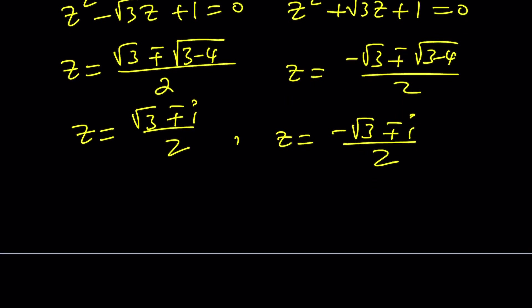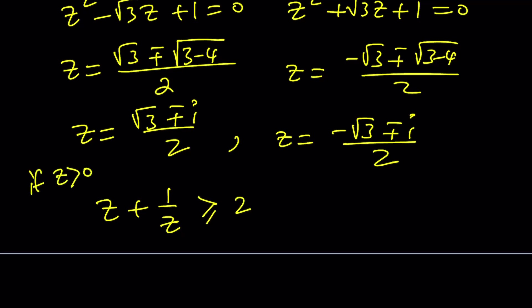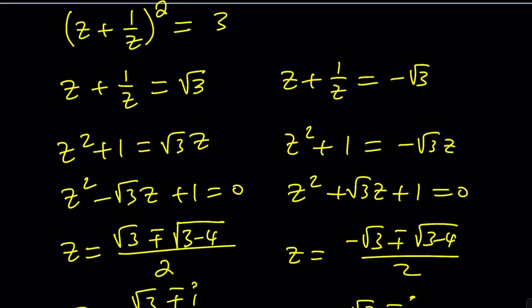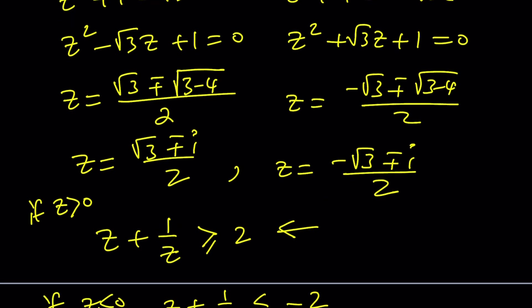Why is that happening? Because if z is positive, then z + 1/z is supposed to be greater than or equal to two — when both are one, the sum is two, otherwise it's greater. We can prove this using AM-GM or another identity. If z is negative, then z + 1/z is less than or equal to negative two. In both cases, square root of three falls outside those boundaries, which means you won't get any real solutions.